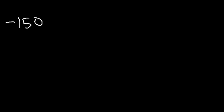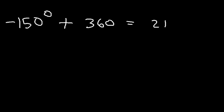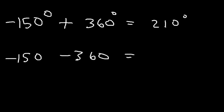Find coterminal angles for the angle negative 150. Just add 360, which gives you 210, and take away 360, which gives you negative 510.